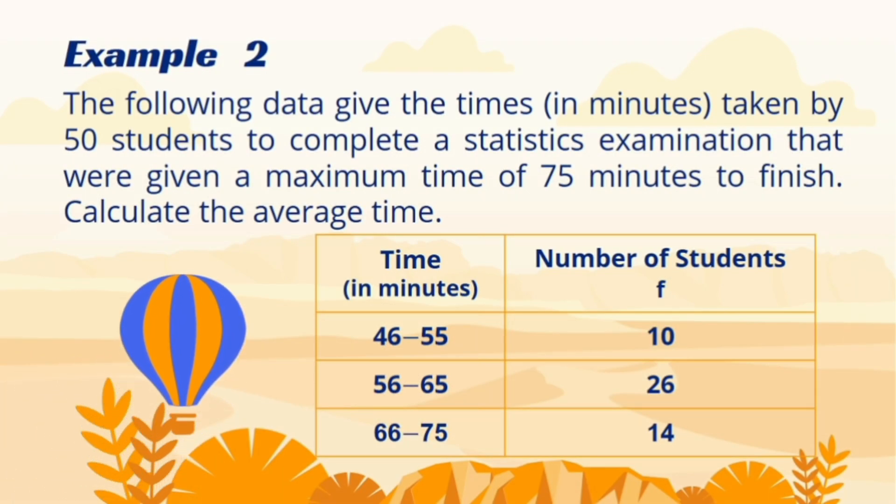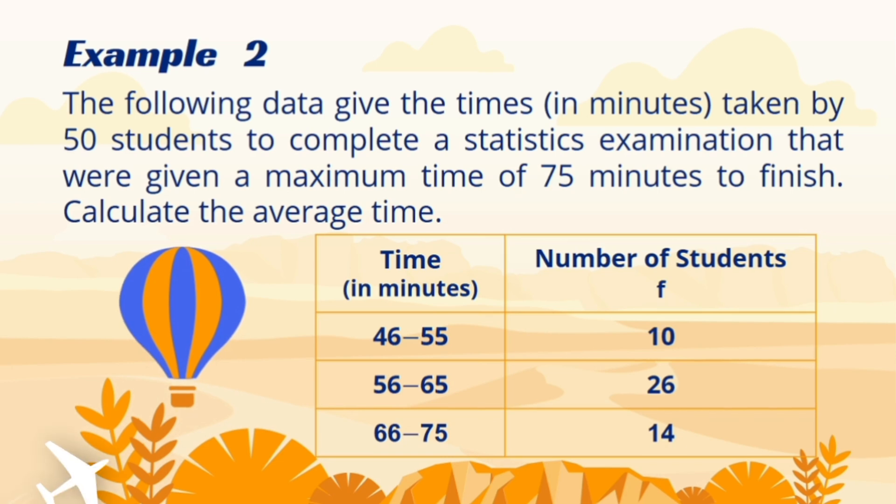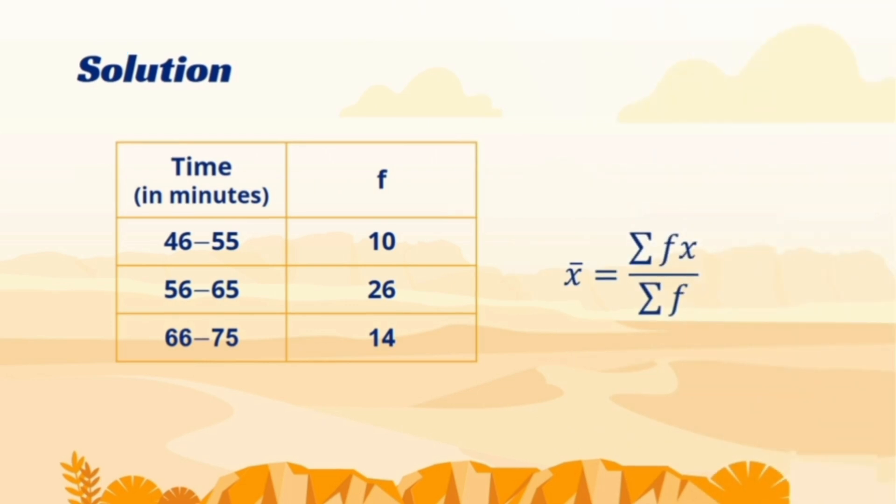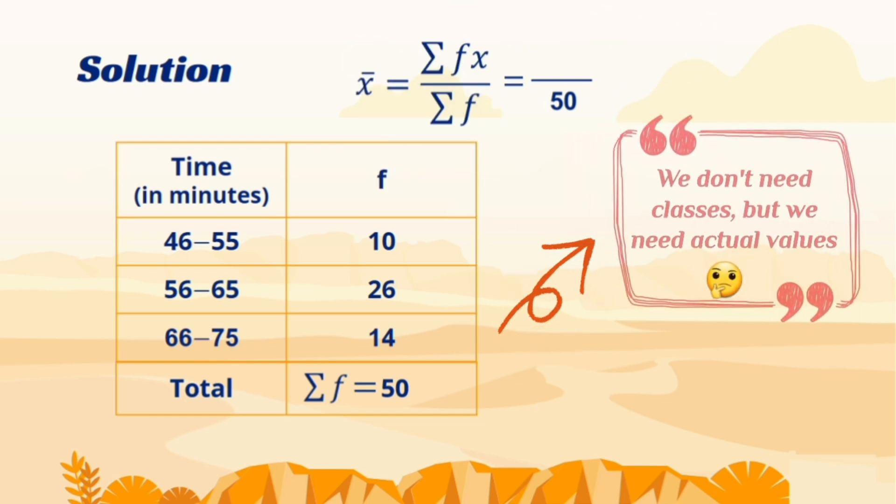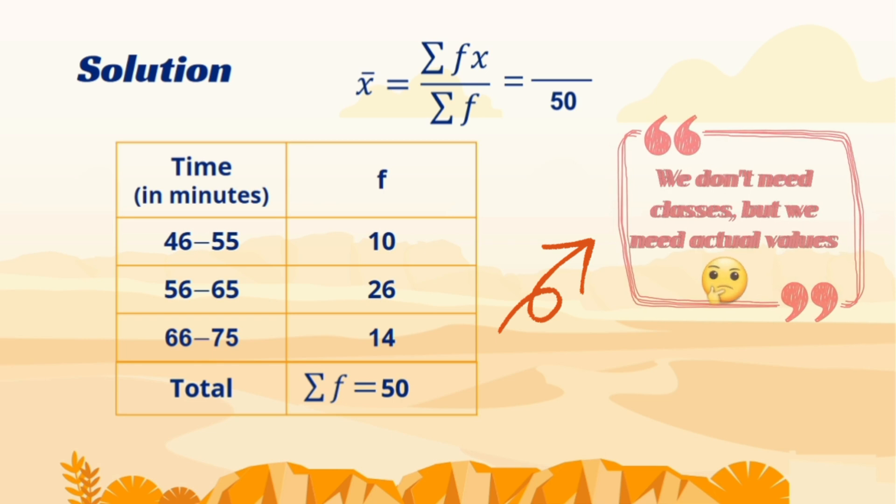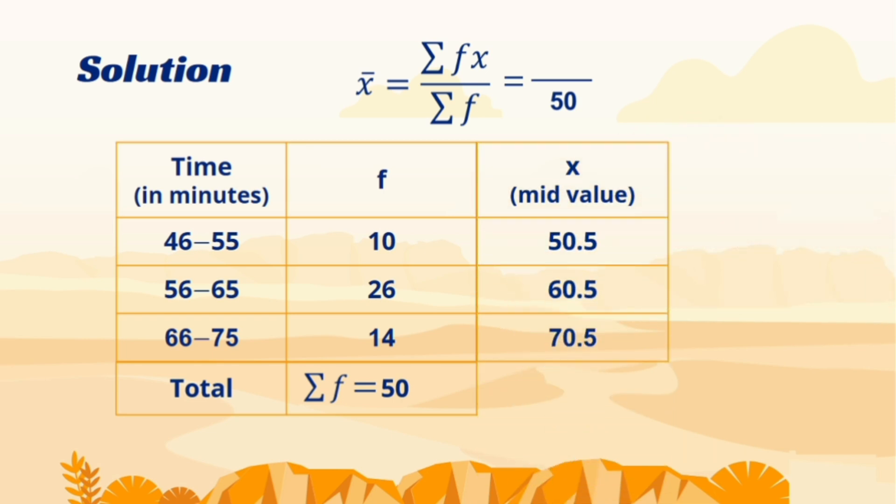Now we move to grouped data analysis, where our teacher wants to check the average time his 50 students spend to complete a test. As it is grouped data, here we use this formula and we need to calculate two sums. First we calculate the lower sum and for next sum, we calculate the mid values obtained by adding the lower and upper limits of a class. And because we add two values, so we divide it by two. The same process is done till the final class.